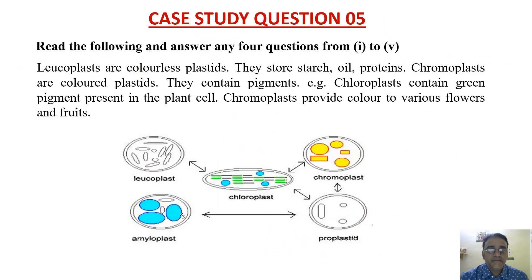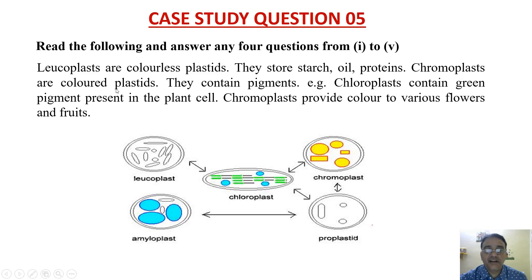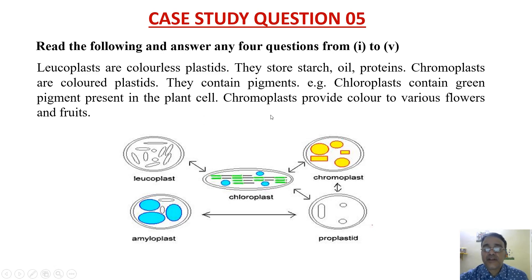Leucoplasts are colorless plastids. They store starch, oil, and proteins. Chromoplasts are colored plastids. They contain pigments. For example, chloroplast contains green pigments present in the plant cell. Chromoplasts provide color to various flowers and fruits.